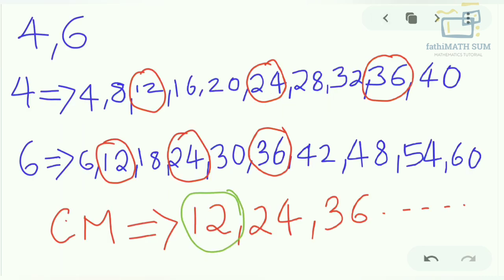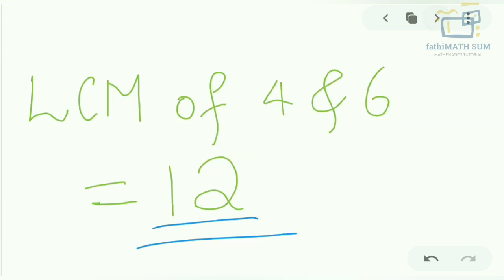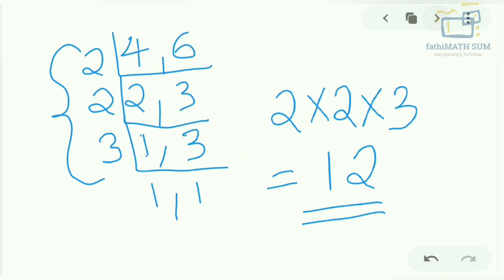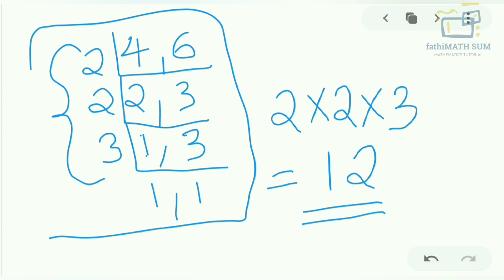By using the division method we found the answer much more quickly. Listing all multiples and finding the common ones takes more time, so we can use the division method to find the LCM quickly and it is easier as well.